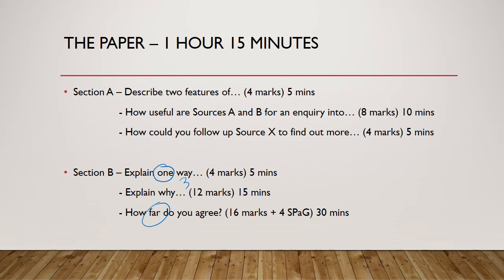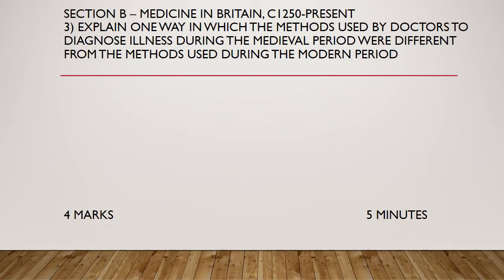Let's have a look at the first question. It's four marks. It says: explain one way in which the methods used by doctors to diagnose illness during the medieval period were different from the methods used during the modern period. So time-wise, medieval versus modern. We're talking about methods used by doctors to diagnose — those are the key words. So it's diagnosis in the medieval and modern period, and it wants one way in which the methods were different.